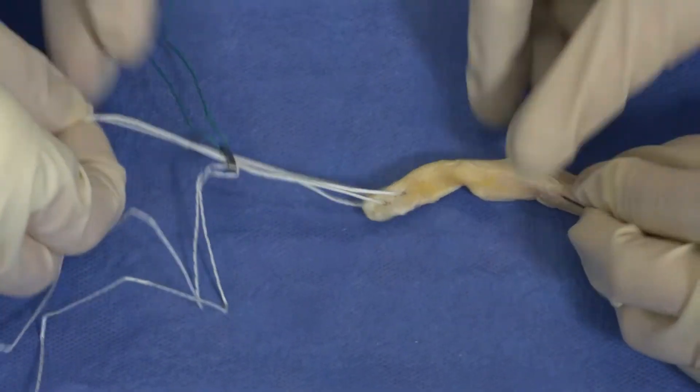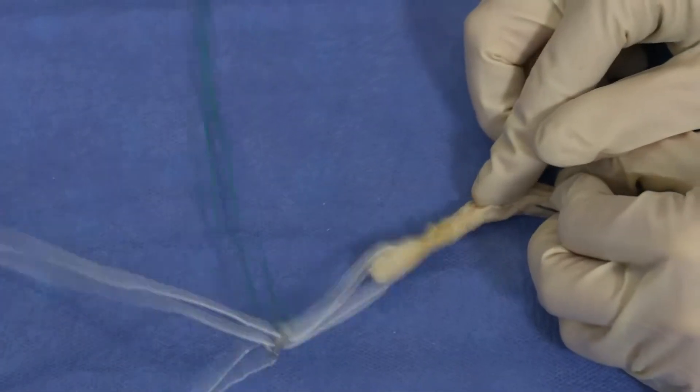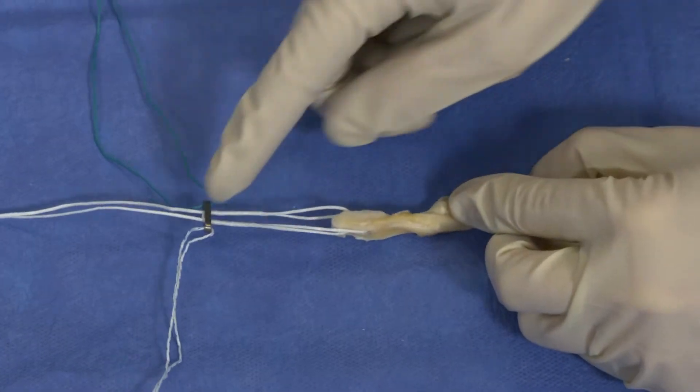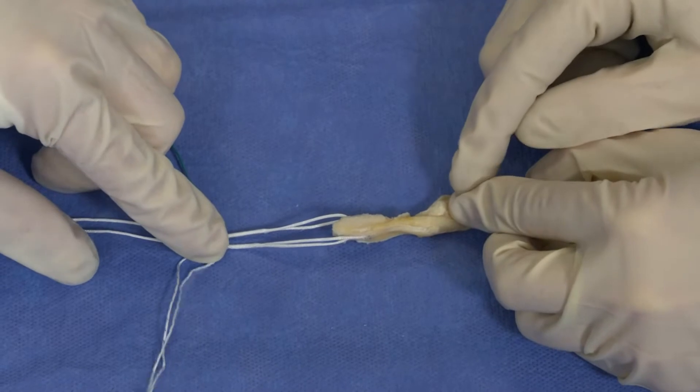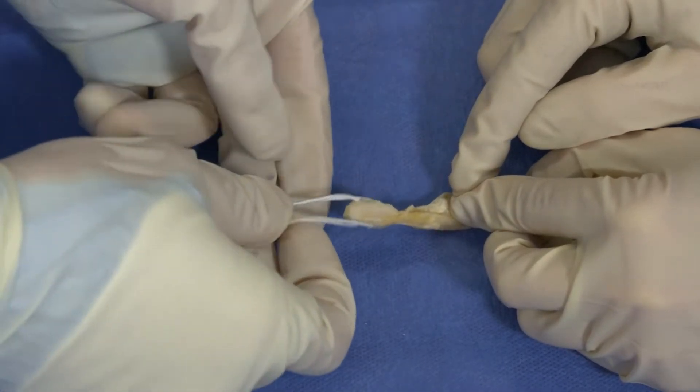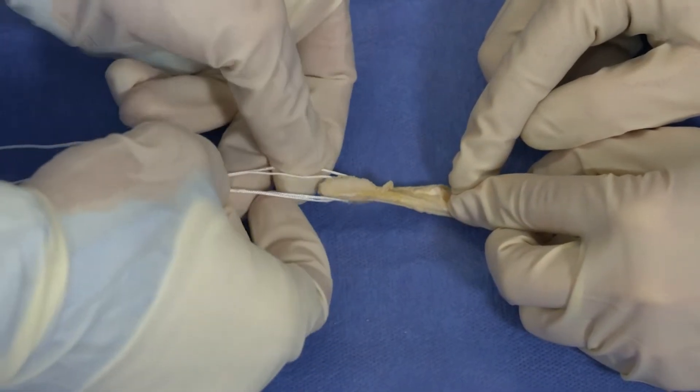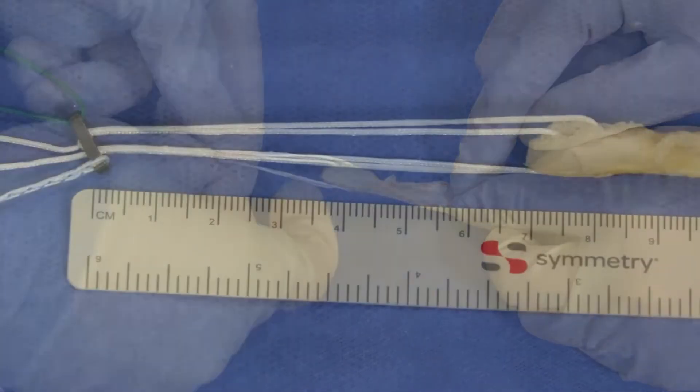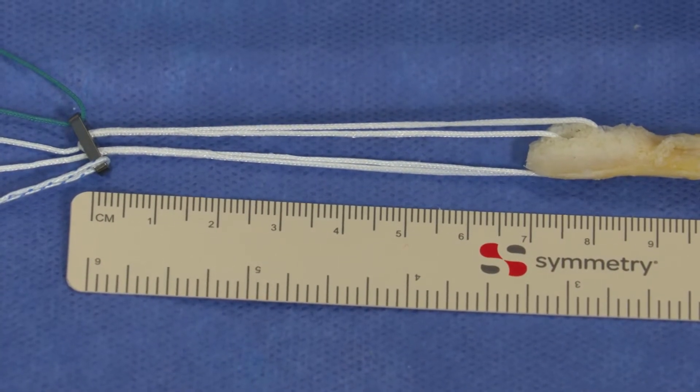One more aspect to prepare the button before it goes into the femoral tunnel will be to elongate the loop. The loop should be approximately 60 millimeters in length to allow for flipping the button. The construct is now complete with the rigid loop BTB.